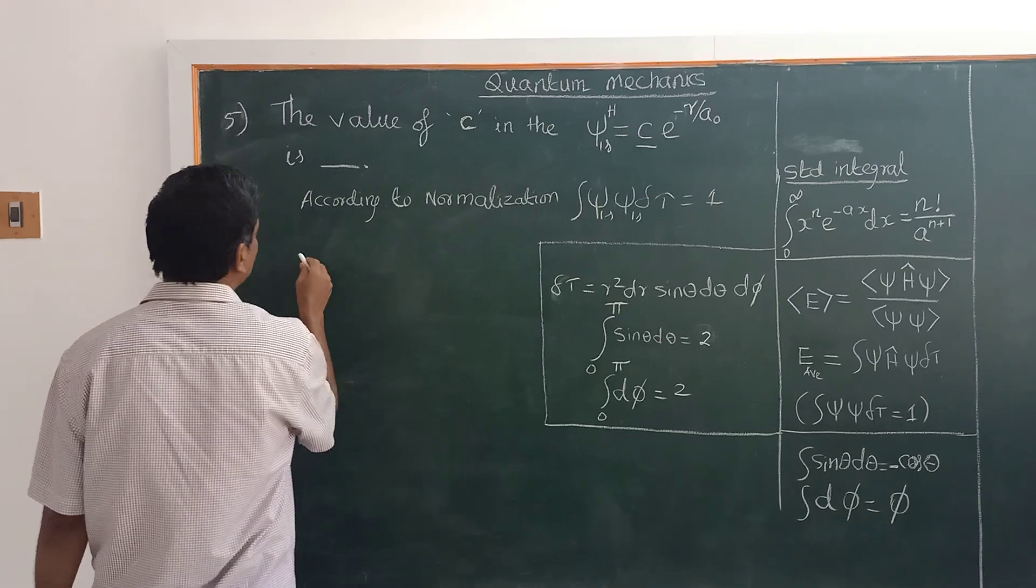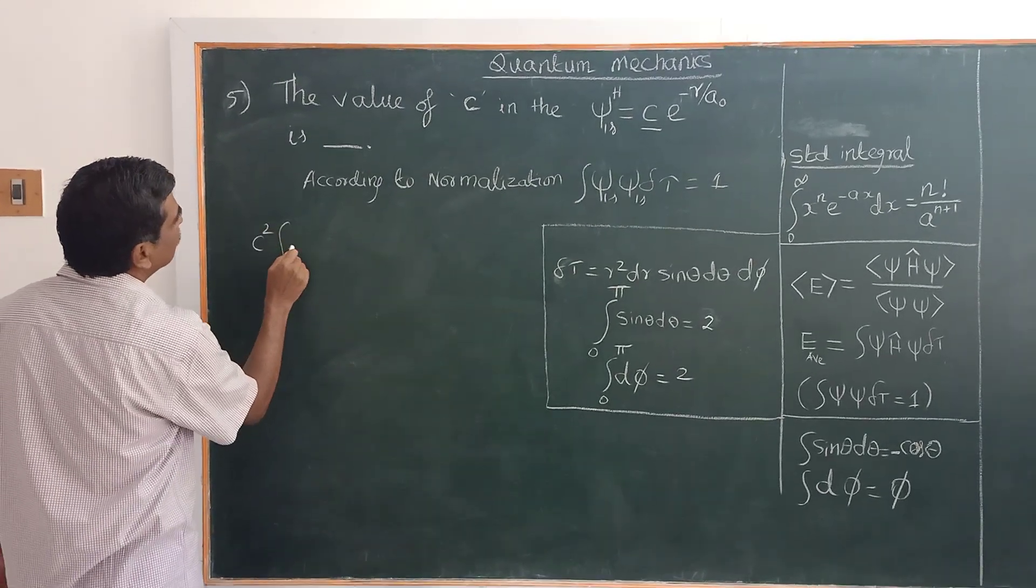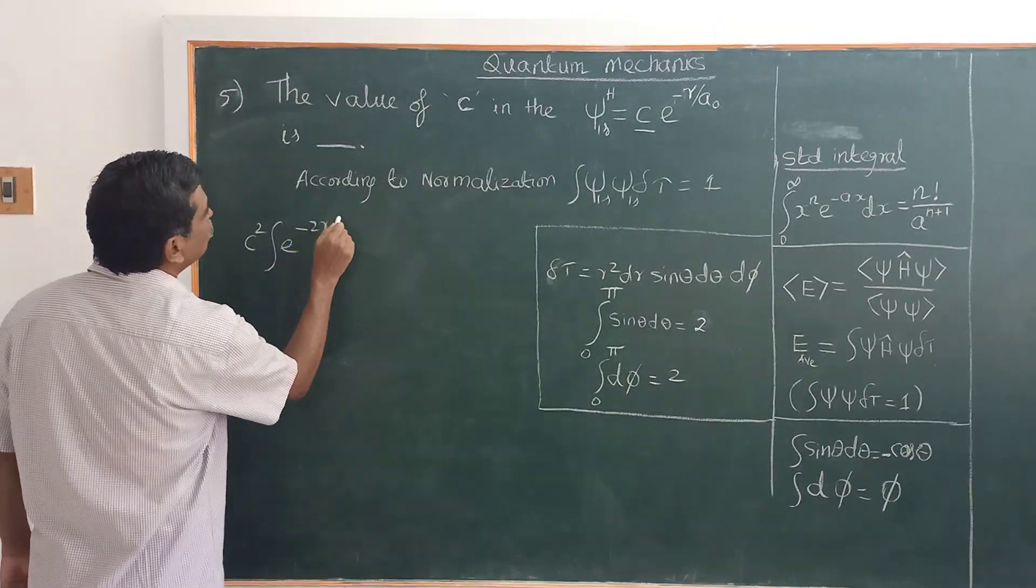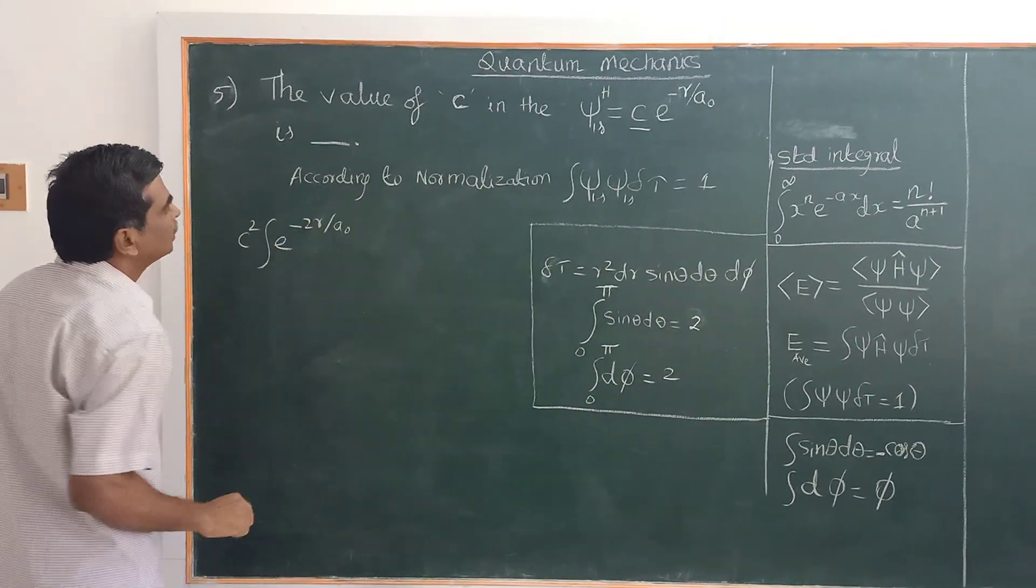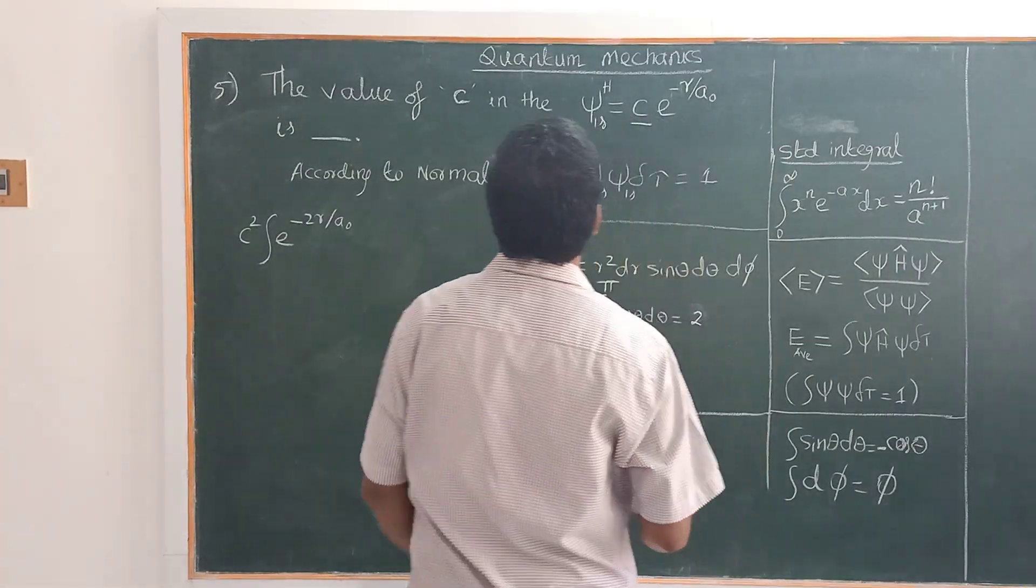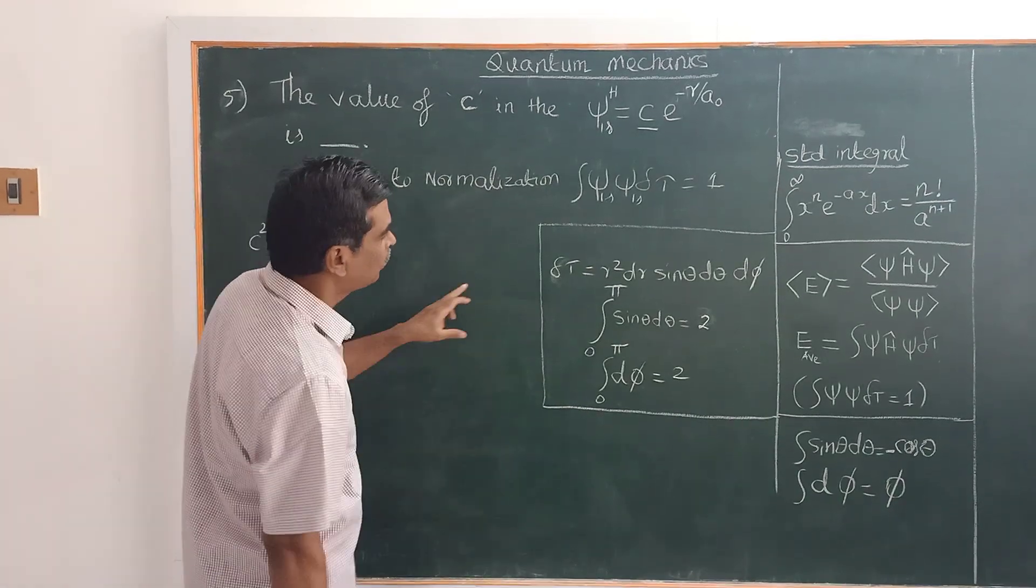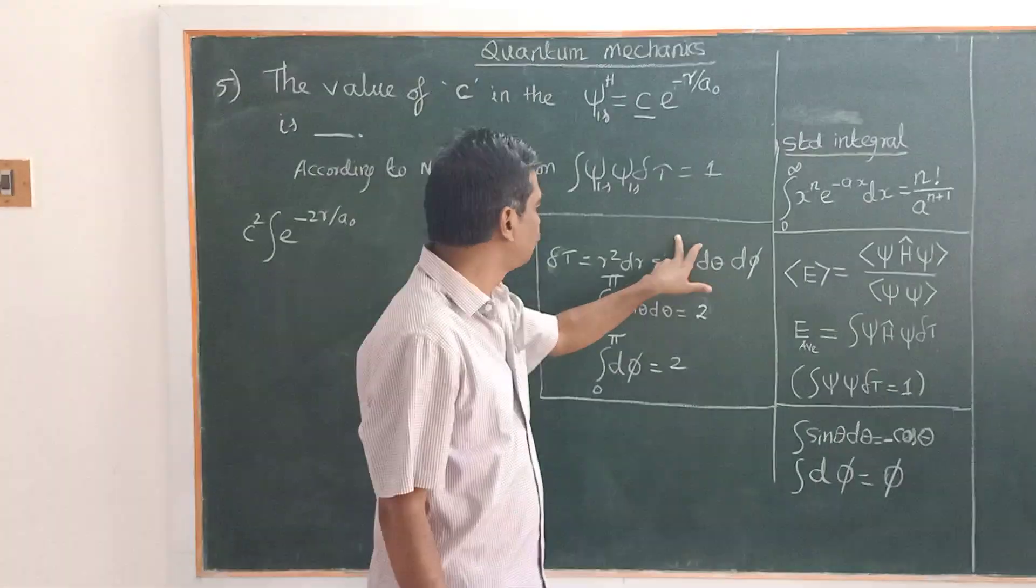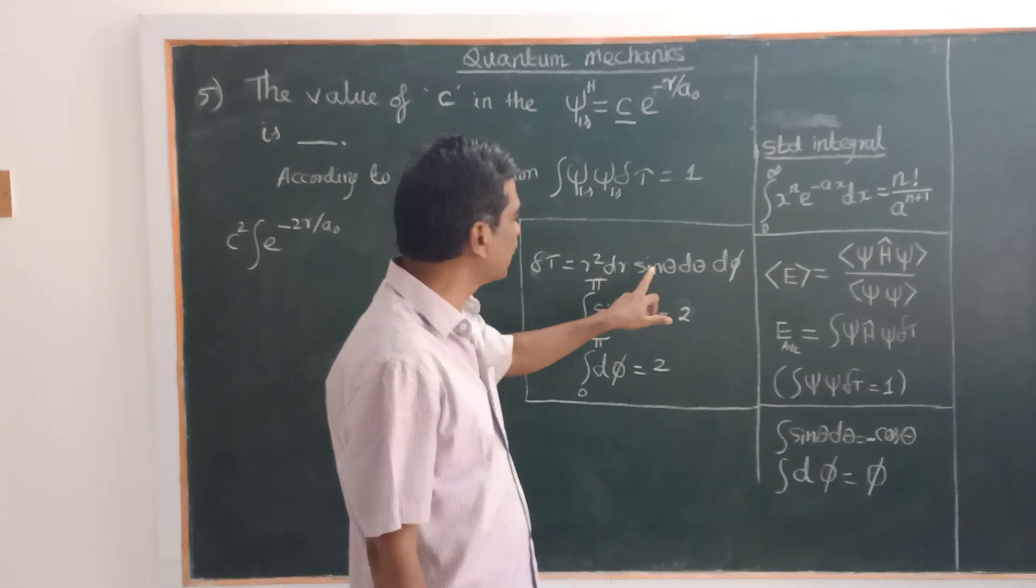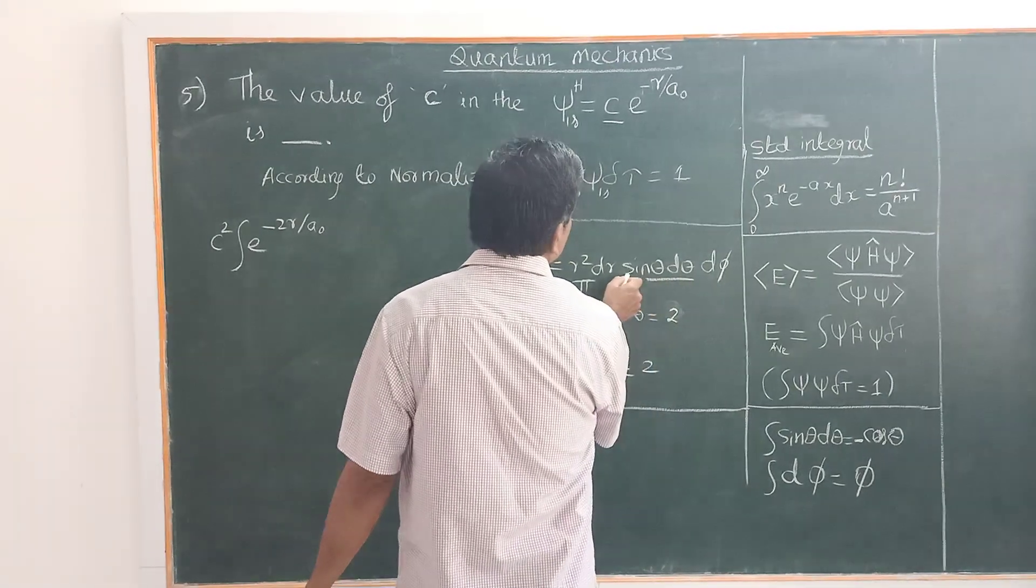On substituting the wave function, C squared e to the power minus 2R by a naught. When you substitute two times, you will get e power, and d tau. d tau in spherical polar coordinates for the hydrogen atom is equal to R squared dR sin theta d theta d phi.